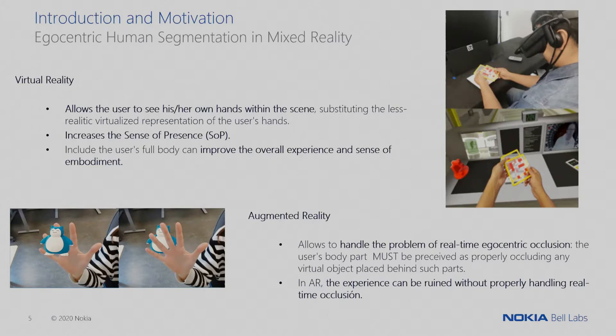We can also improve the overall experience and sense of embodiment. In the case of augmented reality, it allows us to handle the problem of real-time egocentric occlusion. This happens when a virtual object is placed somewhere in the real scene and the user places a body part like their hand in front of it — it will still appear as if the virtual object is in front of the hand, which completely ruins the experience. So in augmented reality, the ability to perform real-time egocentric human segmentation is quite important to achieve a fully immersive experience.